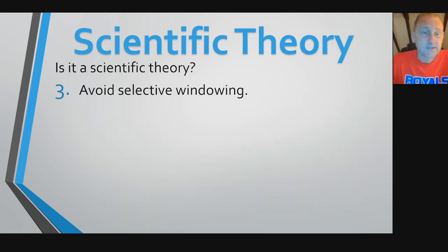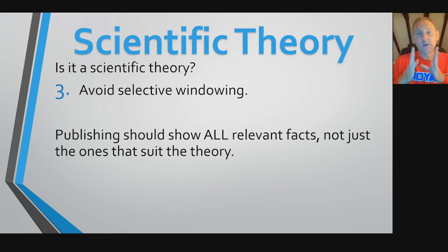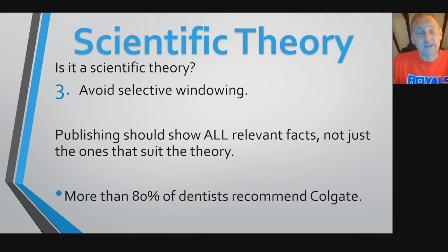The third thing in scientific theories that we have to avoid is selective windowing. For instance, when you get information, you have to publish all of the relevant facts, not just the ones that suit your theory. You can't start data where it's going to be useful in your hypothesis or your theory. You have to show all of the data.